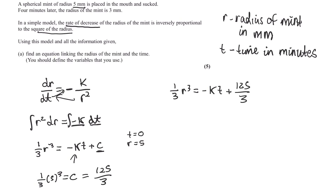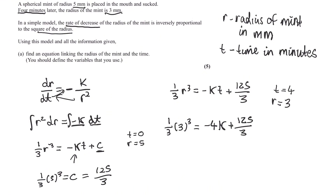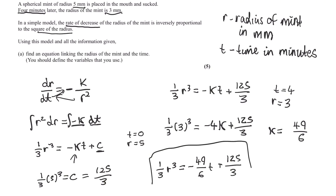Using the second piece of information — four minutes later the radius is 3 millimeters — so when t equals 4, r equals 3. Substituting in: a third times 3 cubed equals minus 4k plus 125 over 3. Rearranging gives k equals 49 over 6. So our final equation is: a third r cubed equals minus 49 over 6 times t, plus 125 over 3. We could simplify this, but it's fine to leave it as that.